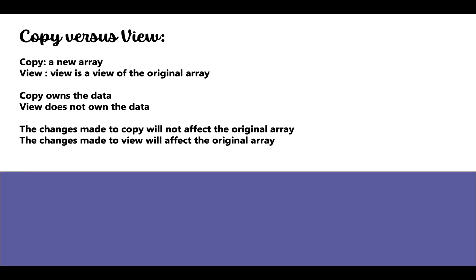The changes made to copy will not affect the original array, but the changes made to view will affect the original array. So copy is just a new array which is a copy of the present array, and view is just the same array with a different name. The changes made to view will affect the original array.